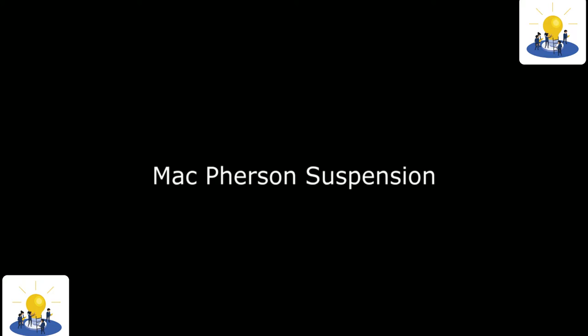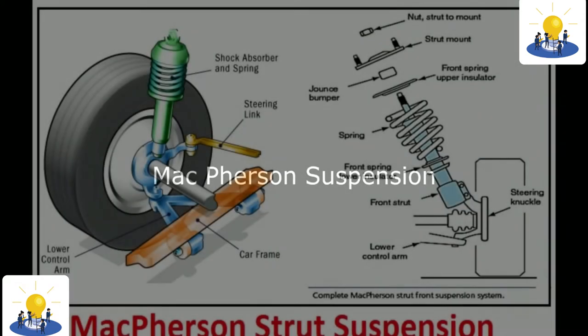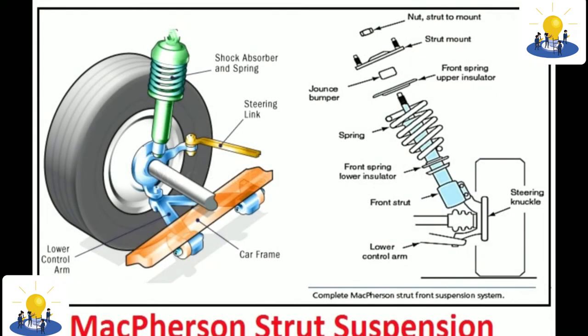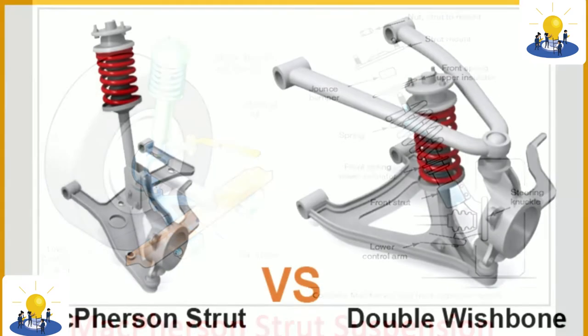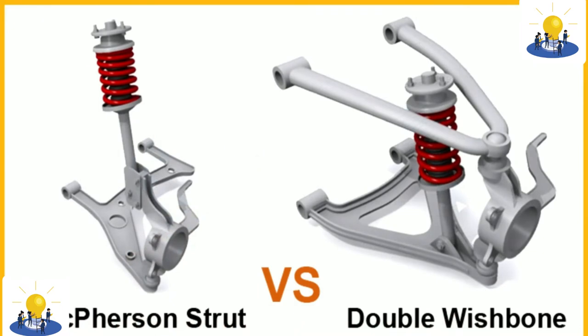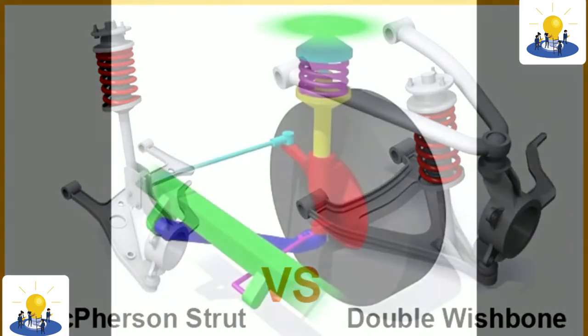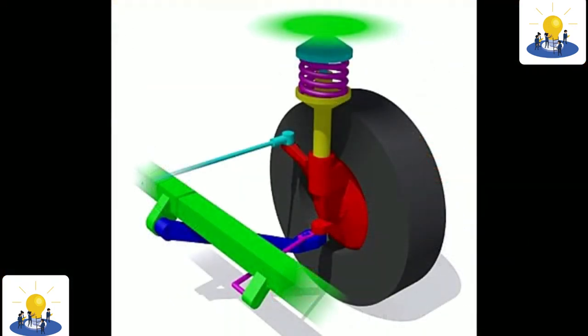Double wishbone suspension. Double wishbone is a type of suspension that has two arms that support the suspension system, namely the upper and lower arms. With this suspension, the car can run stably.